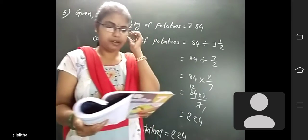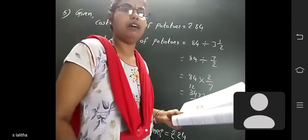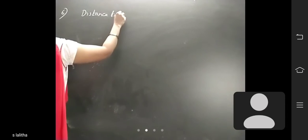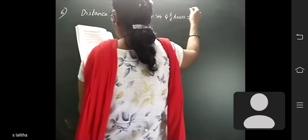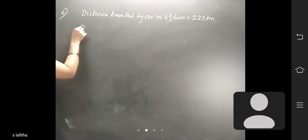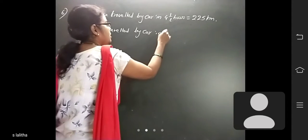Find the distance travelled in one hour. A car travelled 225 kilometres in four and a half hours. Now you have to find the distance travelled in one hour. Distance travelled by the car in four and a half hours is equal to 225 kilometres. Now find the distance travelled in one hour.